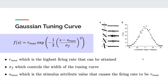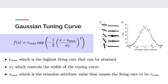s_max is the stimulus value that results in the highest firing rate — here it's set to zero, and you can center it however you like depending on how you quantify your stimulus. sigma_f is the standard deviation that controls the width of the tuning curve.